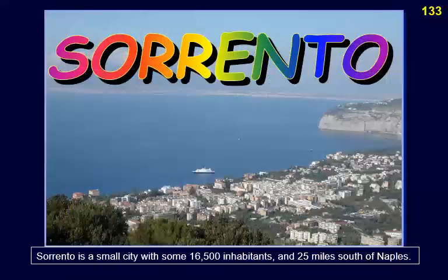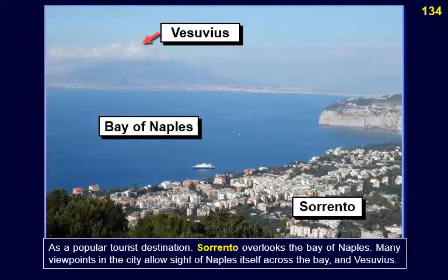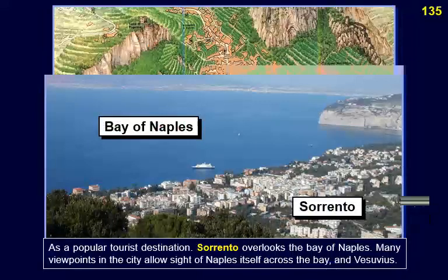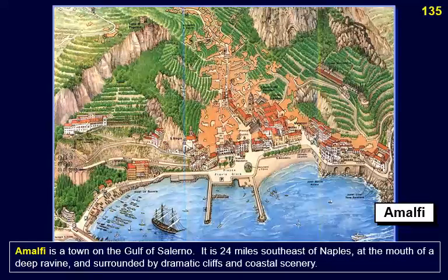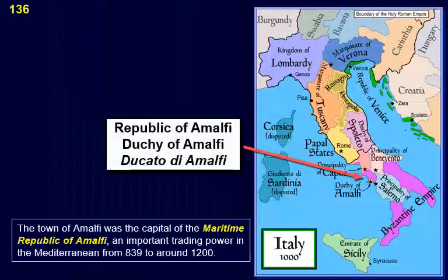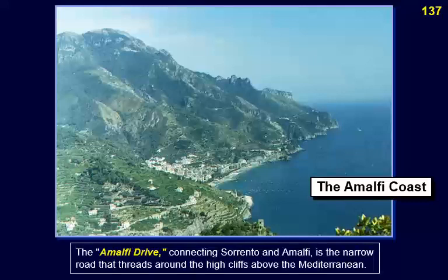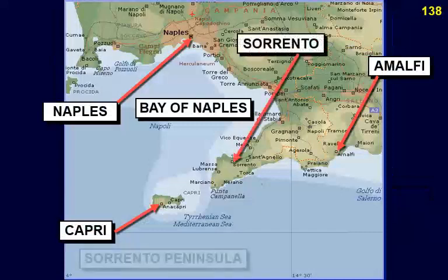Sorrento is a small city with some 16,500 inhabitants, 25 miles south of Naples. As a popular tourist destination, Sorrento overlooks the Bay of Naples, and many viewpoints allow sight of Naples itself across the bay and of Vesuvius. Amalfi is a town on the Gulf of Salerno, 24 miles southeast of Naples, at the mouth of a deep ravine and surrounded by dramatic cliffs and coastal scenery. The town of Amalfi was the capital of the maritime Republic of Amalfi, an important trading power in the Mediterranean from 839 to around 1200. The Amalfi Drive connects Sorrento and Amalfi along a narrow road threading around high cliffs above the Mediterranean.